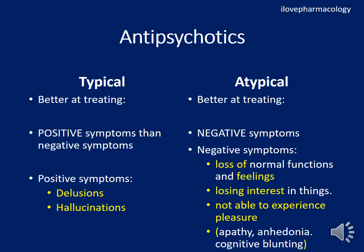Typical antipsychotics are better at treating positive symptoms than negative symptoms. In schizophrenia you have both positive and negative symptoms. Positive symptoms such as delusions and hallucinations are well treated by typical antipsychotics, whereas atypical antipsychotics are better at treating negative symptoms — they treat positive symptoms too but the relief for negative symptoms is comparatively greater.